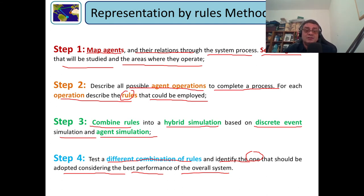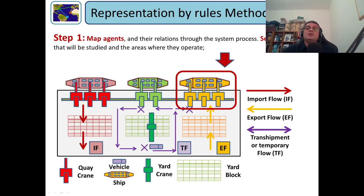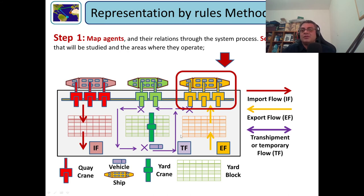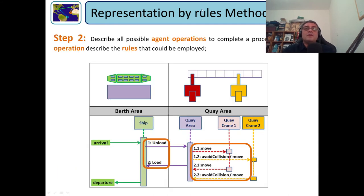We can imagine mapping these two agents - the container ship and the quay cranes - this is a simplified view of a container port. We have import flow, export flow, transshipment flow, many kinds of equipment and iterations between them. We have the yard block, yard cranes, and as many equipment as we can handle. On the second step, since we have selected the container ship and the quay crane, we describe the operations.